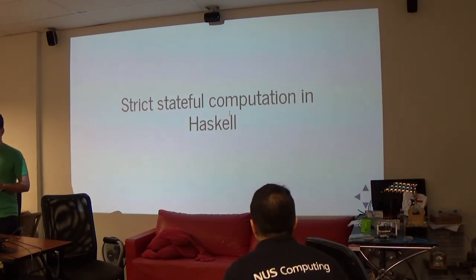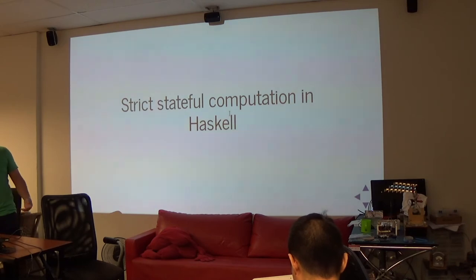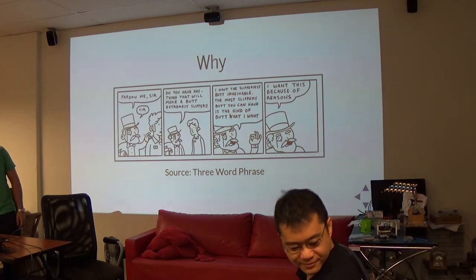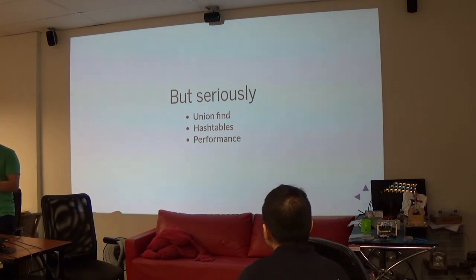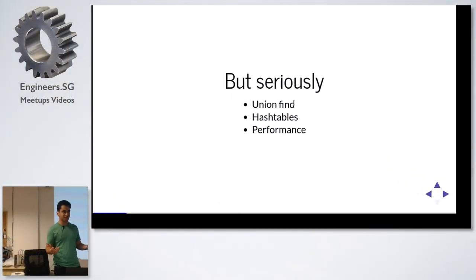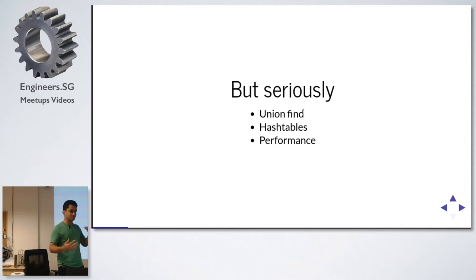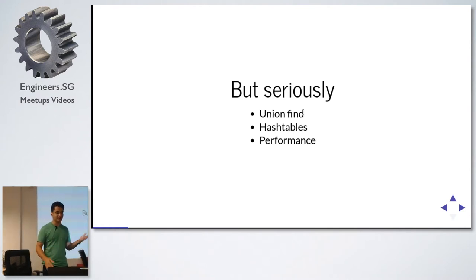Sometimes in Haskell we want to do strict stateful computations, and Haskell is a lazy functional programming language. So how do you do strict computations in Haskell, and why would you want to? Sometimes you want to do things like union-find in a graph algorithm, which involves iteratively updating mutable state. Sometimes you want mutable hash tables, which are a pretty fast data structure. Sometimes you want performance because the way Haskell thinks about things differs from the underlying hardware, and the closer you are to the hardware, the better performance you can get.